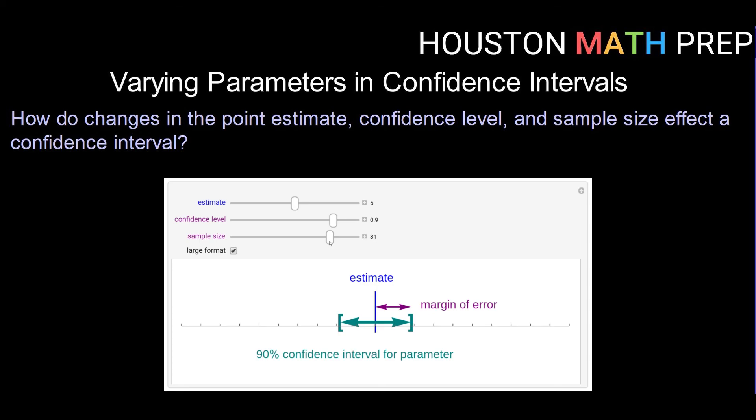All right guys, that does it for this look at how varying the parameters of confidence level and sample size affect our confidence intervals and margin of error. Until next time, catch you in a future video.